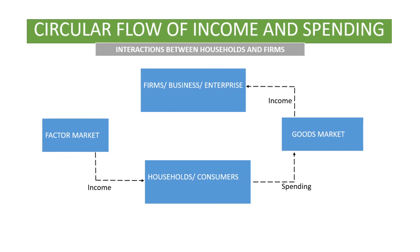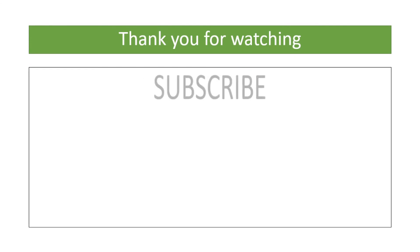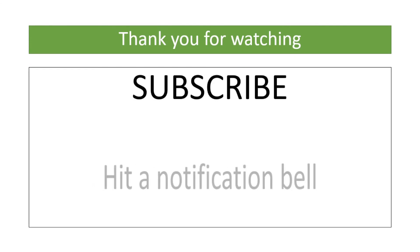Firms get money from the goods market by selling their goods and services in that market. And then they spend their income in the factor market by purchasing the factors of production. Thank you for watching. Thank you.